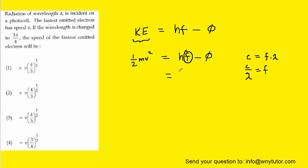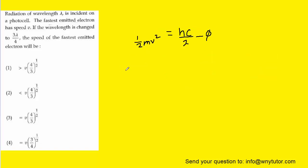So we're going to replace frequency with the expression speed of light divided by wavelength. Now, we have the velocity v marked here, and it turns out there are actually two speeds. One is when the wavelength is simply lambda — in that situation, the fastest emitted electron has a speed of v, which we'll call v1. In that case, we're using a wavelength of just lambda.